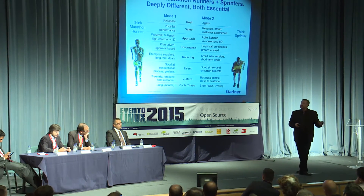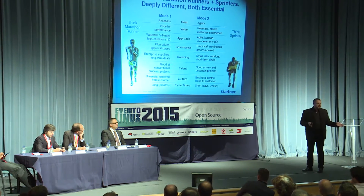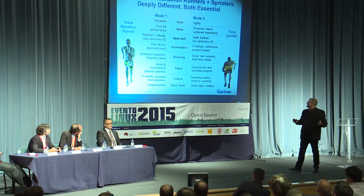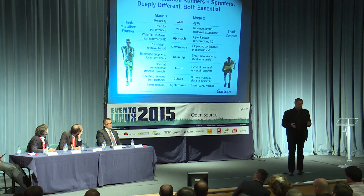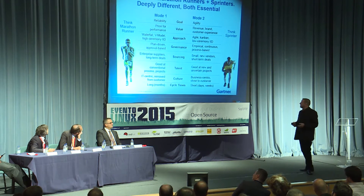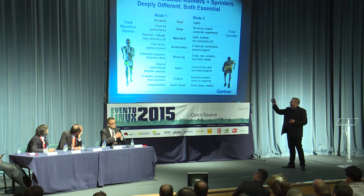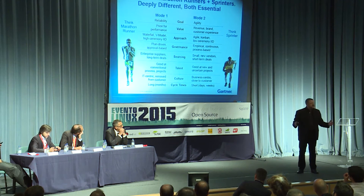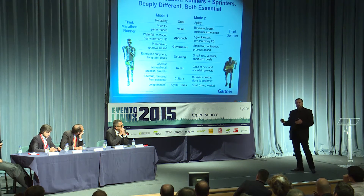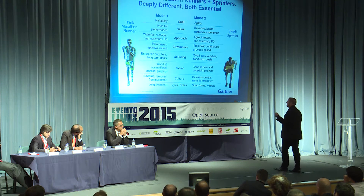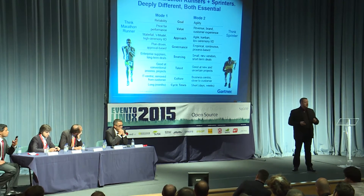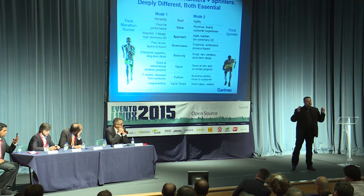These are two different approaches that need to live together: reliability versus agility, price-for-performance versus customer experience, waterfall model versus agile sprint development. For sourcing: Mode One uses big, established vendors. Mode Two may require smaller, innovative vendors, and short-term deals — because you don't know if what you're building will be a success for 10 years or just a few months.